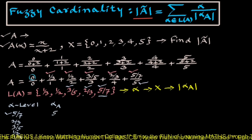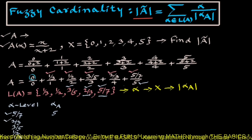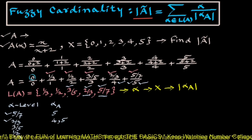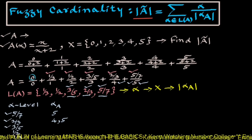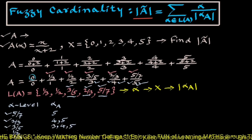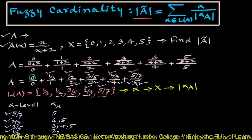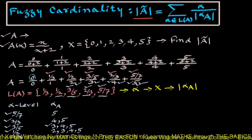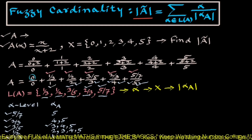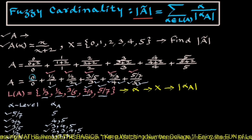Corresponding to alpha equals 2/3, we have 2 values: {4, 5}. Corresponding to alpha equals 3/5, we have 3 values: {3, 4, 5}. Corresponding to alpha equals 1/2, we have values {2, 3, 4, 5}, which is all values from the third row plus 2. Finally, for alpha equals 1/3, we have {1, 2, 3, 4, 5}, that is 1 and all values from the fourth row.